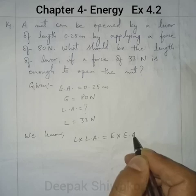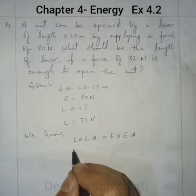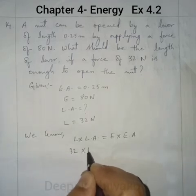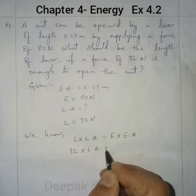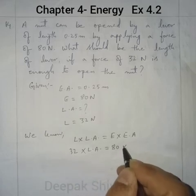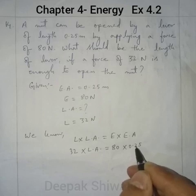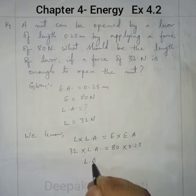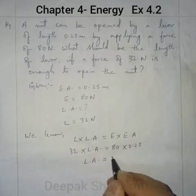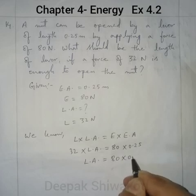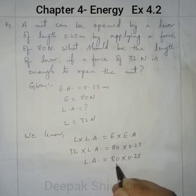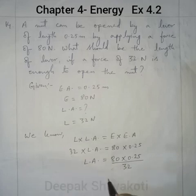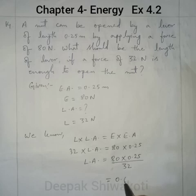Putting in the values: effort arm, load we have to find, effort 80, and 0.25 metres. So load arm = (80 × 0.25) / 32. When we calculate this, we get 0.625 metres. Do the calculation in the rough.